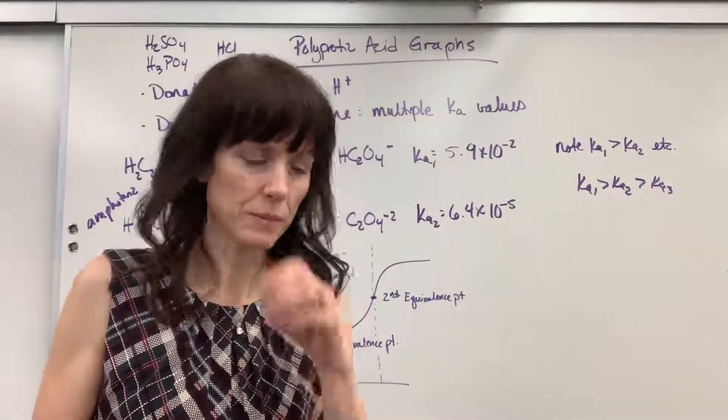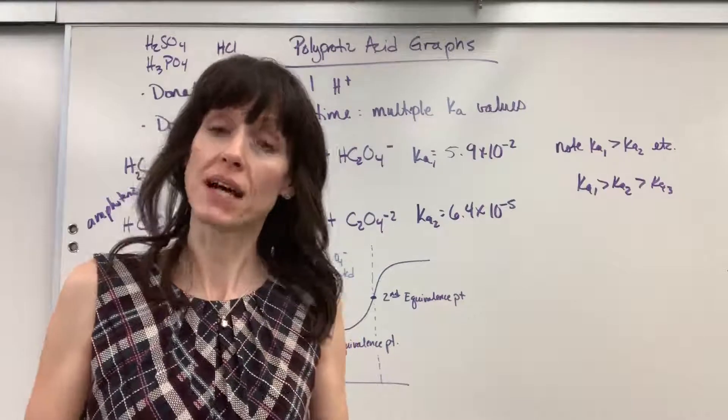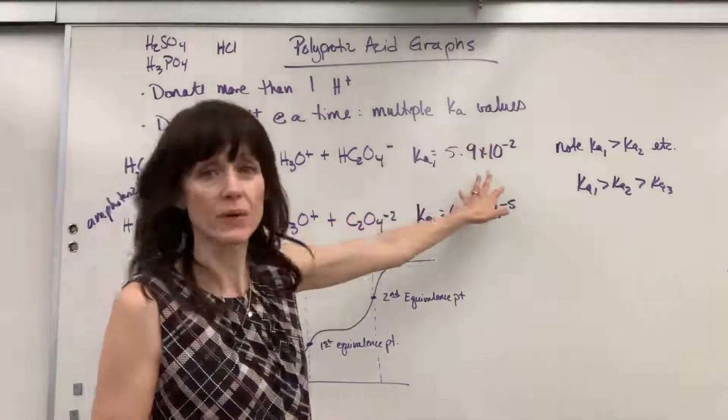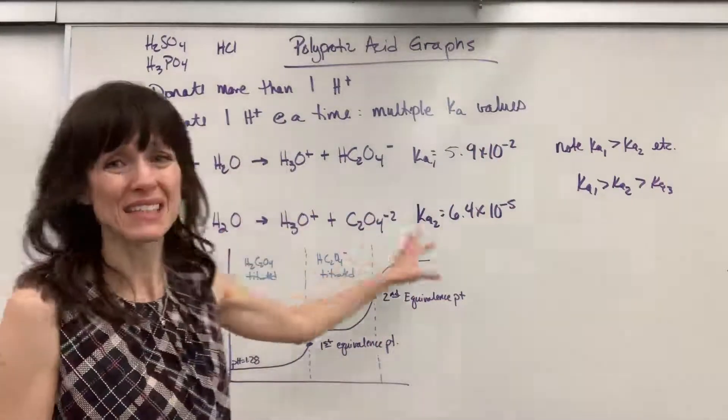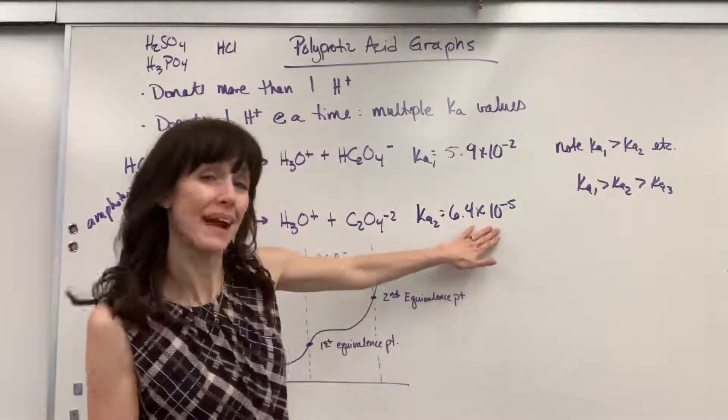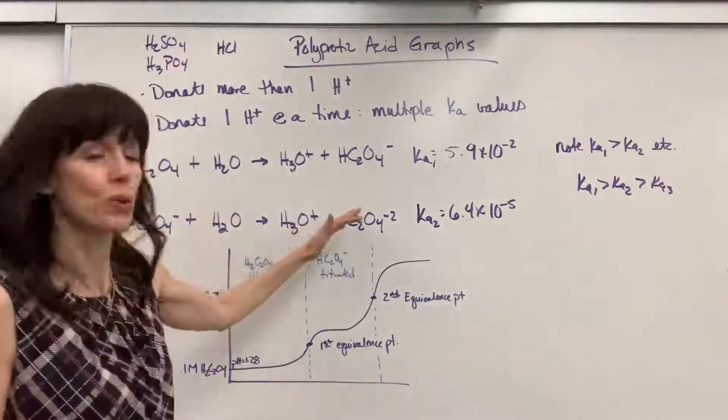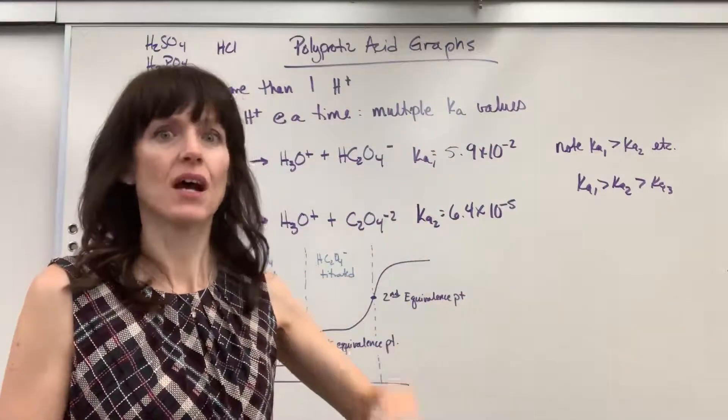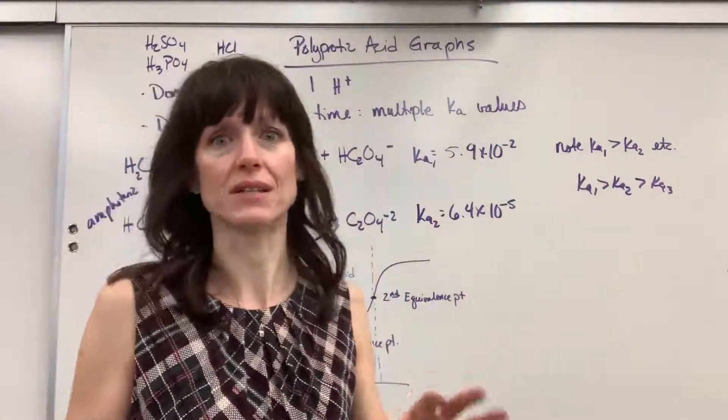So what that tells us is that the first hydrogen, it is going to deprotonate, it's going to react the most. And then losing the second hydrogen, well, that's a little less. And you can see that right here, that this is more reactive favored than this one is. So it won't react quite as much. So with each successive deprotonation, there is a smaller Ka value, which means less of it reacts.